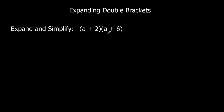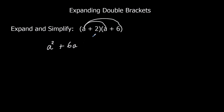We've got a plus 2 multiplied by a plus 6. To do that we've got to multiply both of the terms in the first bracket by both of the terms in the second bracket. So a multiplied by a first — a times a is a squared. Then a multiplied by 6 is 6a. Then the second term by both terms in the second bracket: 2 times a is 2a, and 2 times 6 is 12.